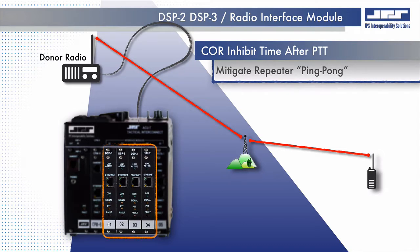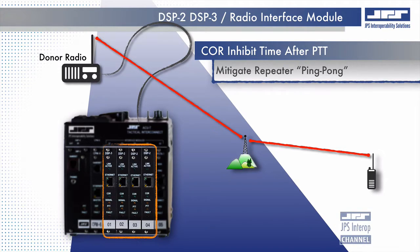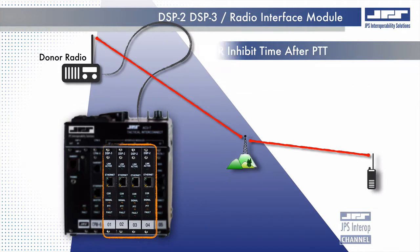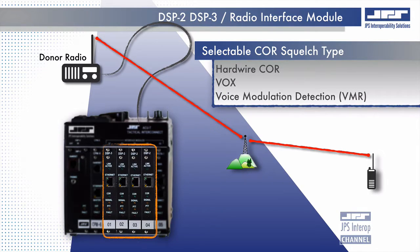Other fully adjustable parameters that help guarantee seamless radio interoperability include core inhibit time after PTT, which mitigates the ping-ponging effect often experienced with cross-connecting multiple disparate LAN mobile radio repeaters. Selectable core squelch types allow detection of a fully-squelched receiver using either hard-wired core signaling, VOX, or voice modulation recognition, where human speech is detected in the presence of intrinsic radio noise such as single sideband and HF radio systems.